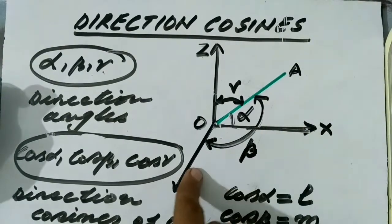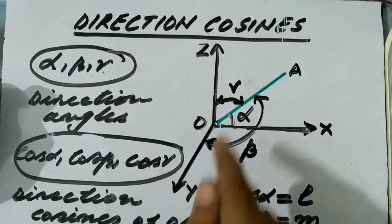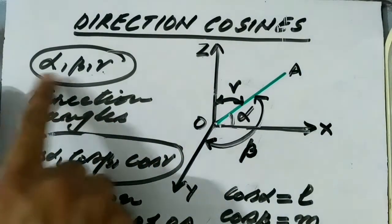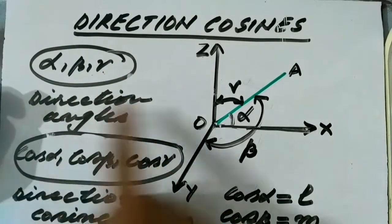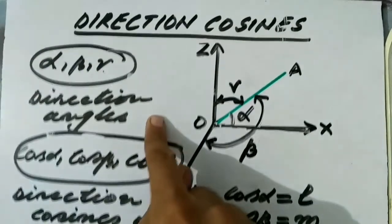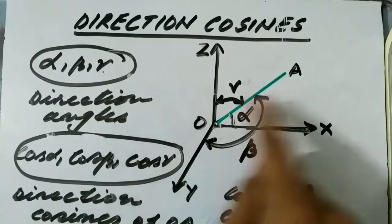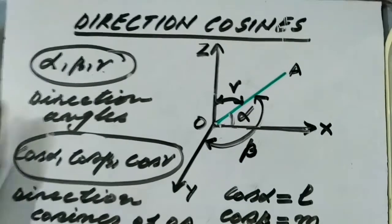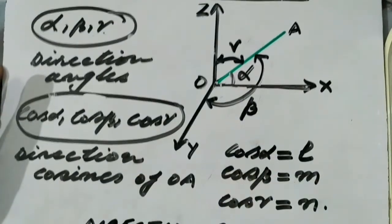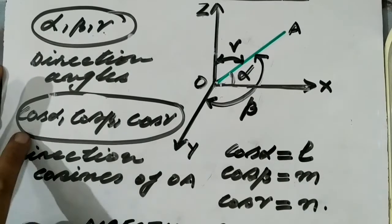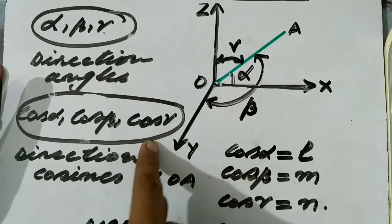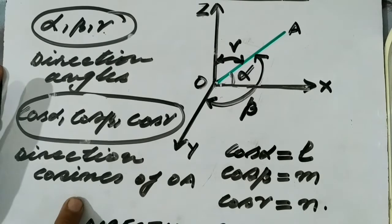So OA makes angles alpha, beta, and gamma with the x-axis, y-axis, and z-axis respectively. Then alpha, beta, gamma are called the direction angles of OA. The cosines of these direction angles — that is, cos alpha, cos beta, cos gamma — are called the direction cosines of OA.